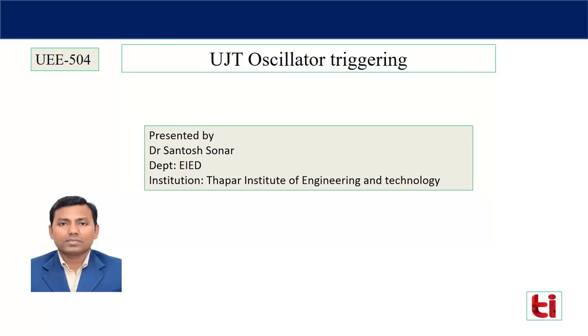In that case, emitter current will increase and voltage will decrease. The point at which UJT turns on is peak voltage and the current is increased up to valley current.